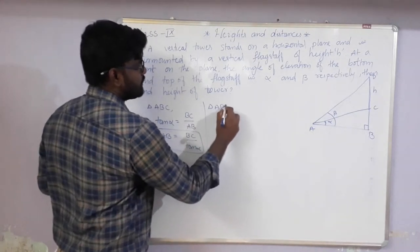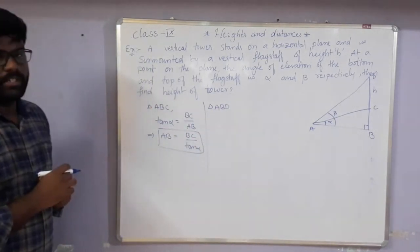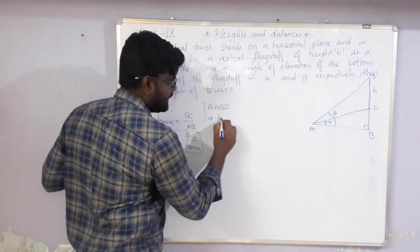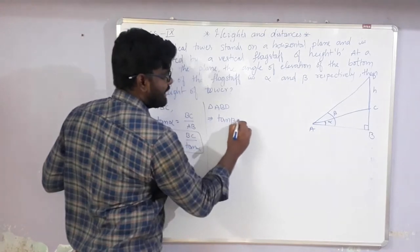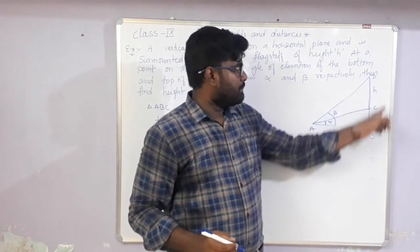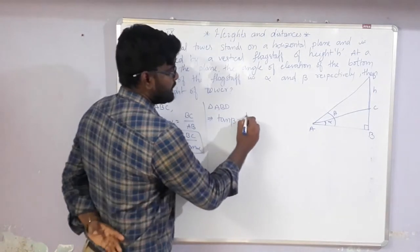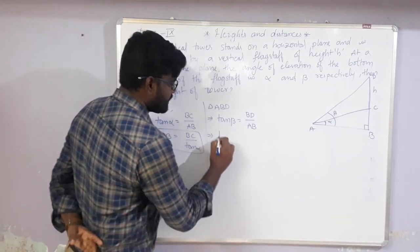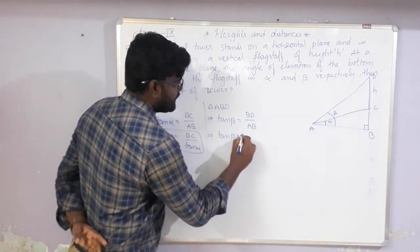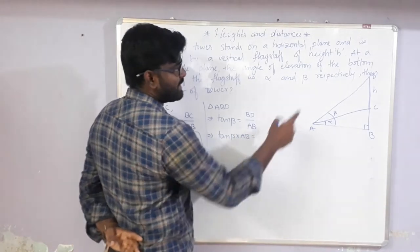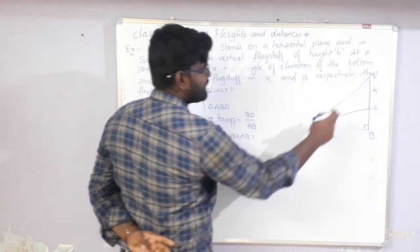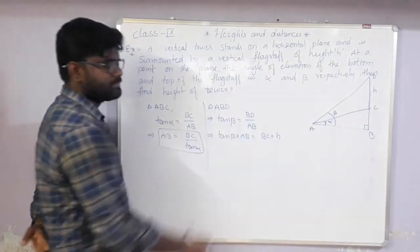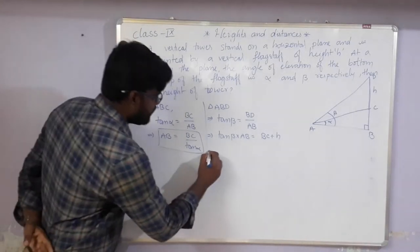Now we take triangle ABD and apply tan beta. When taking tan beta, the opposite side is BD and adjacent is AB. So tan beta × AB = BD, which can be written as BC + CD, and CD is nothing but h. So tan beta × AB = BC + h.